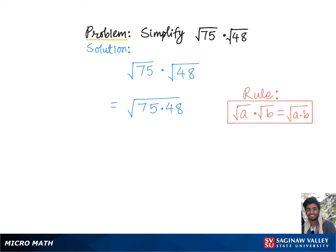Now we'll break down this radical as multiples of highest possible perfect squares. So we have square root of 75 can be rewritten as 25 times 3, and 48 can be rewritten as 16 times 3.